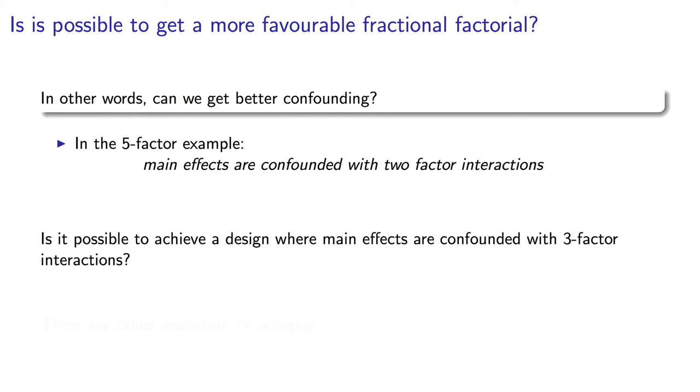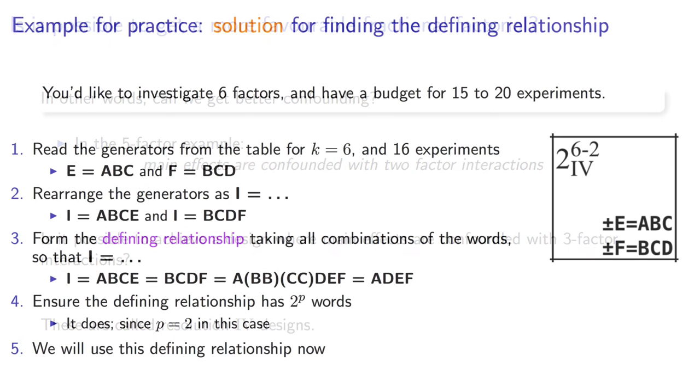Now you could step back and ask, what if you wanted a design where main effects are only aliased with third-order interactions? Is that possible? Well, that is possible. Such fractional factorial designs are called resolution 4 designs. The 3 in the three-factor interaction plus a 1 from the main effect adds up to give you a 4. I'm going to give you a useful way to remember that rule shortly.